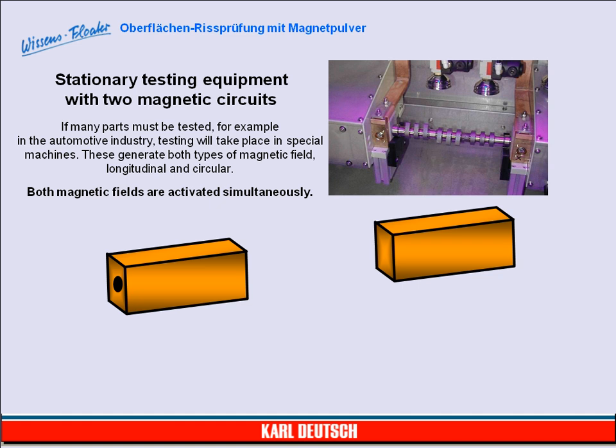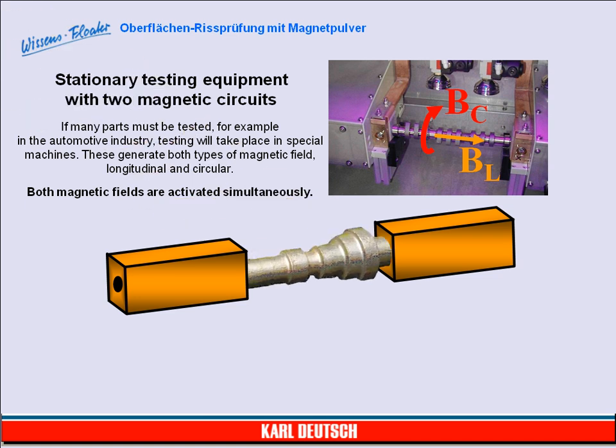Stationary testing equipment with two magnetic circuits. If many parts must be tested, for example in the automotive industry, testing will take place in special machines. These generate both types of magnetic fields — longitudinal and circular — and both magnetic fields are activated simultaneously.